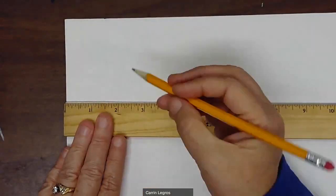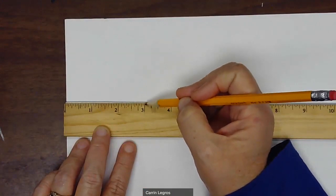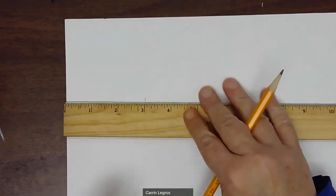I'm going to make a mark above the three. Now the three is here, but it's the long line next to the three that's actually three inches. So I'm going to make a little mark.